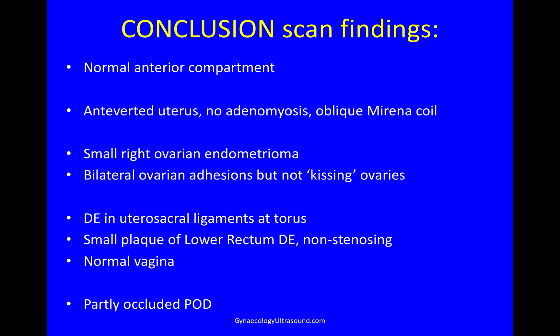My conclusion of the scan was that there's a normal anterior compartment. The uterus is anteverted with no adenomyosis, but with an oblique Mirena coil. There's a small right ovarian endometrioma and some bilateral ovarian adhesions, but the ovaries are not kissing. There is some deep endometriosis in the uterosacral ligaments near the torus, with a small plaque of lower rectum deep endometriosis which looks non-stenosing, a normal vagina, and an only partly occluded pouch of Douglas very low down.